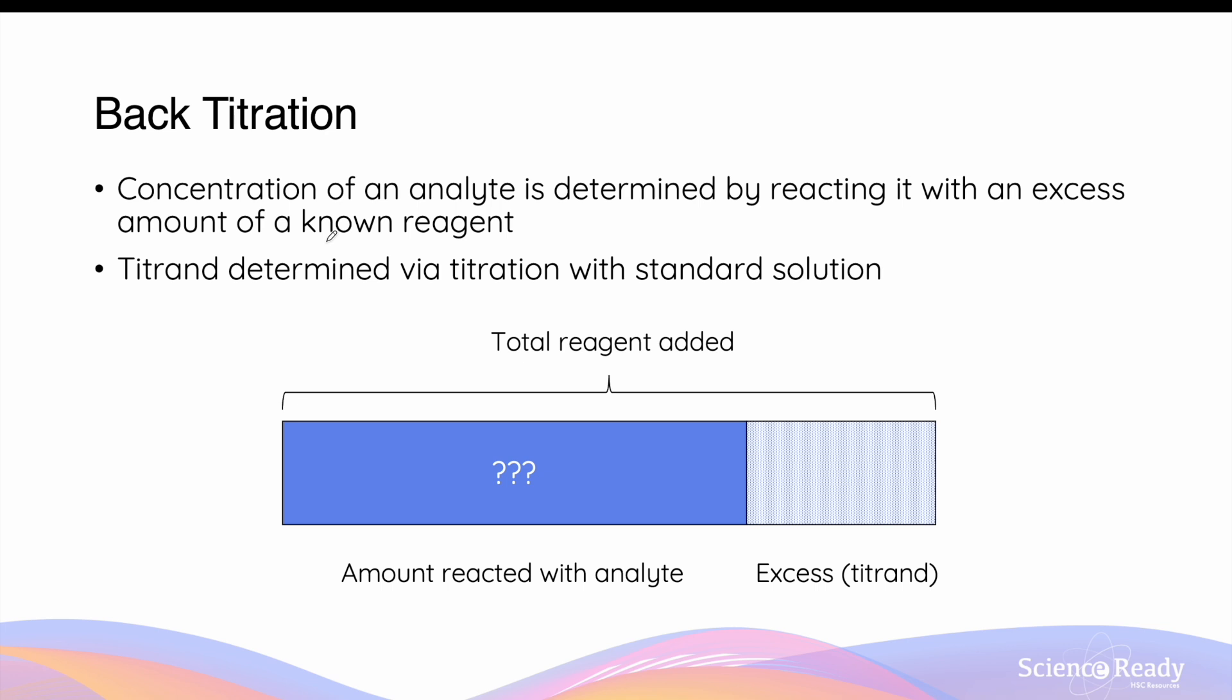In back titration, the concentration of an analyte, that is the unknown solution that you're trying to determine the concentration of, is determined by reacting the substance with an excess amount of a known reagent. This means the standard solution, whereby we know its concentration.